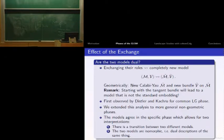This allows for two interpretations. First, there's a transition between two different models through this phase. Second, these two models are actually isomorphic - dual descriptions of the same thing.